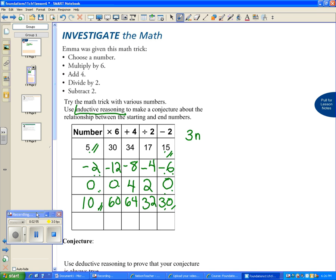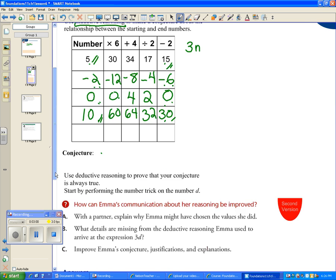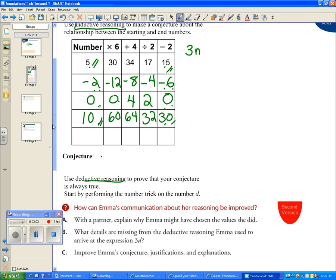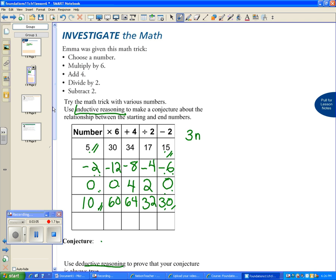But now what they want us to do is use deductive reasoning. Deductive reasoning means that we start with a fact, do our reasoning, and come up with a conclusion at the end. We're going to let n be a number. We're going to multiply it by 6, so we get 6n. We're going to add 4: 6n plus 4. We are going to divide by 2.